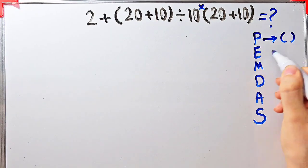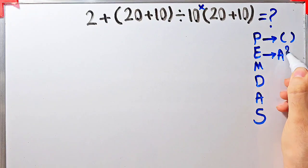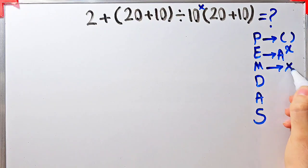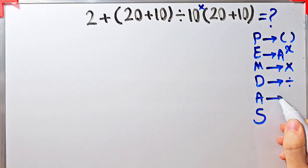P stands for parentheses, E stands for exponent, M stands for multiplication, D stands for division, A stands for addition and S stands for subtraction.